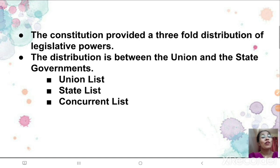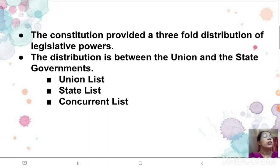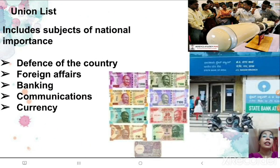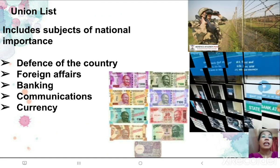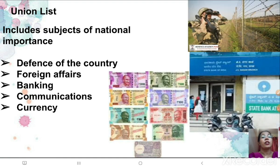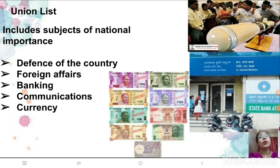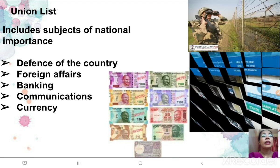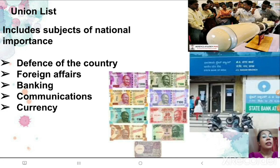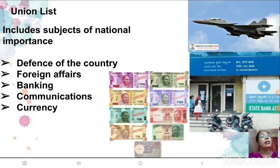One of the features of a federal country is that the constitution provides a three-fold distribution of legislative powers between the union and the state government. The first is the union list. It includes subjects of national importance like the defense of the country, foreign affairs, banking, communication, and currency. Related to these subjects, only the central government can make laws.